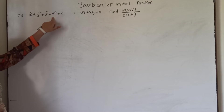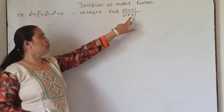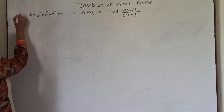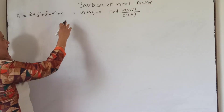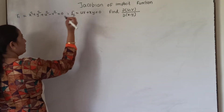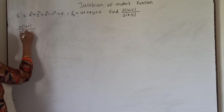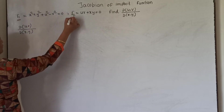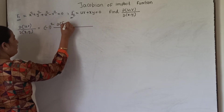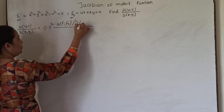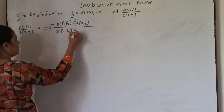Now for another example: x² + y² + u² − v² = 0 and uv + xy = 0. We want to find the Jacobian of uv with respect to xy. Let f1 = x² + y² + u² − v² and f2 = uv + xy. Since we have two functions, we multiply by minus 1 squared, giving Jacobian of f1, f2 with respect to xy upon Jacobian of f1, f2 with respect to uv.